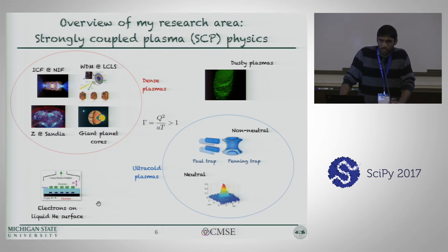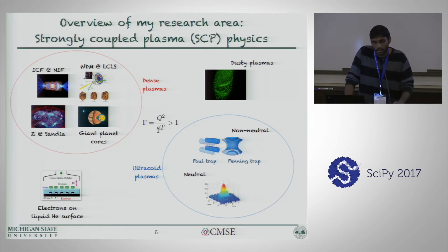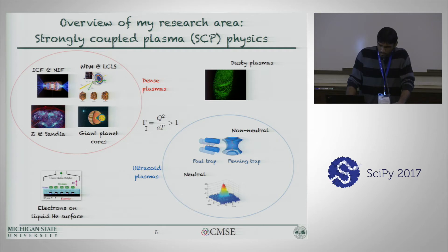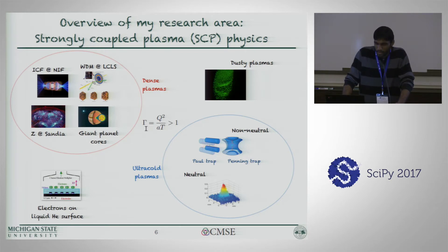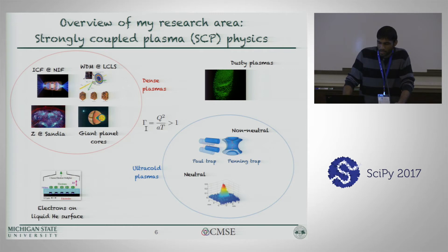Plasmas are charged particle systems that are constantly in motion and constantly interacting. If the average charge in the system is Q, the average separation between particles is A, and the temperature of the system in units of energy is T, then the ratio gamma is referred to as the Coulomb coupling parameter. If that's greater than 1, the plasma is characterized as strongly coupled. As far as I know, the only reliable way of accurately capturing strongly coupled plasma dynamics is using MD.